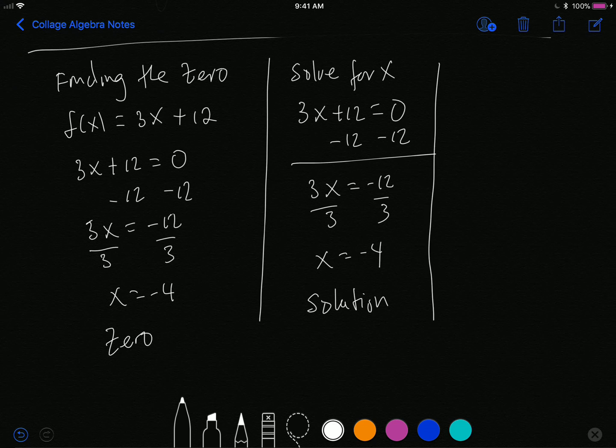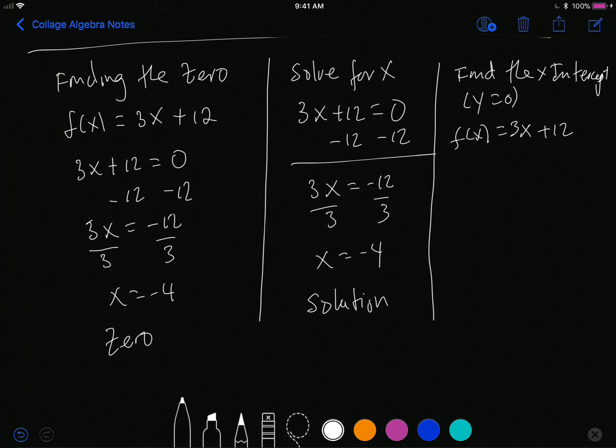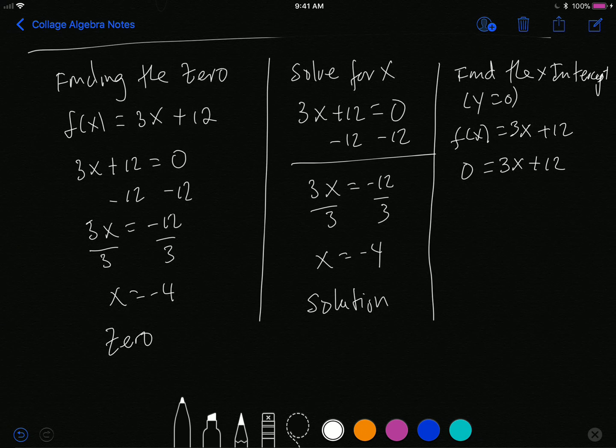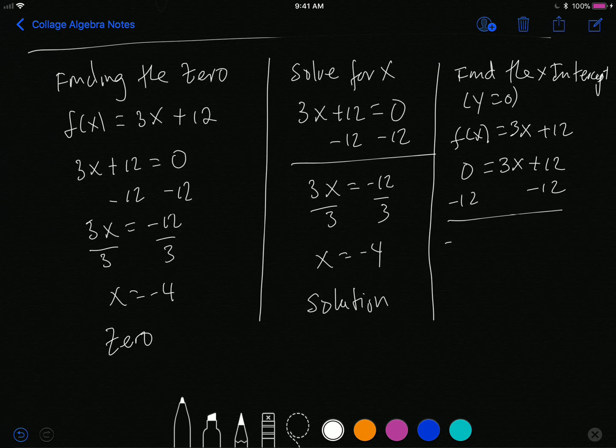This right here is the solution. And again, if I ask you to find the x-intercept, that means make y equal zero. And if I have a function f(x) equals 3x plus 12, if I make y zero, lo and behold I get exactly the same problem. So subtract 12, I'm getting tired of subtracting 12 now, negative 12, 3x equals negative 12, divided by 3, I get x equals negative 4.